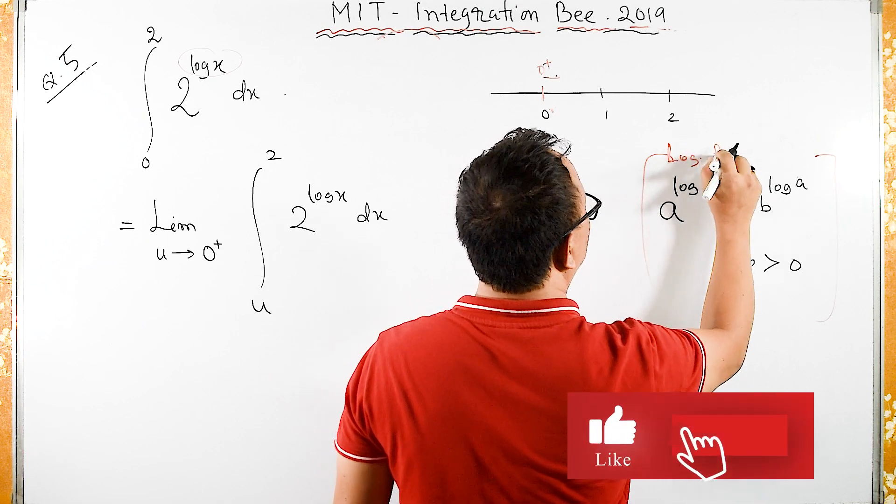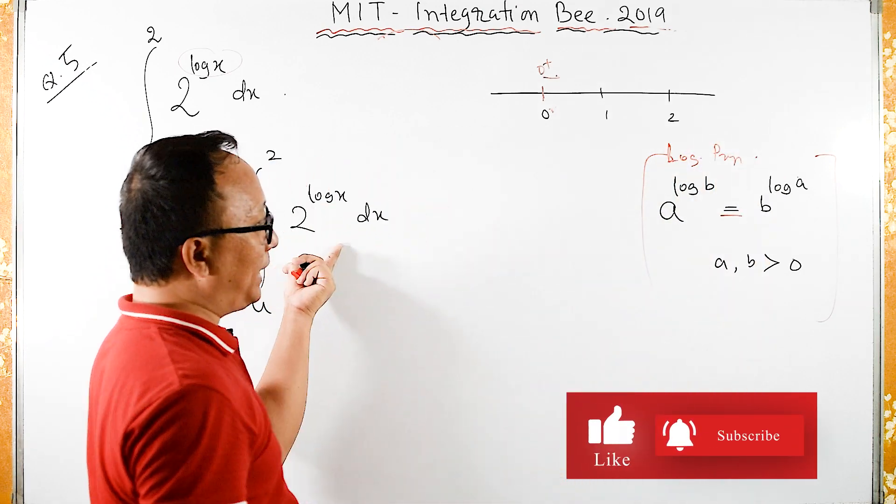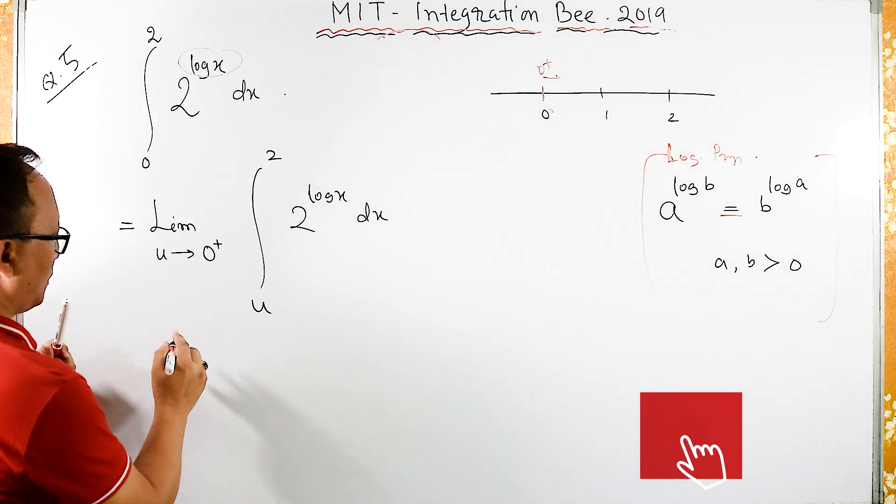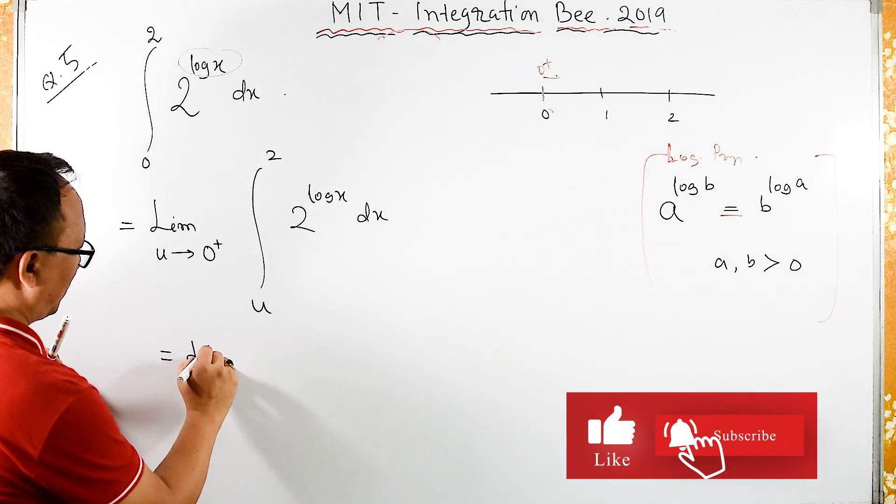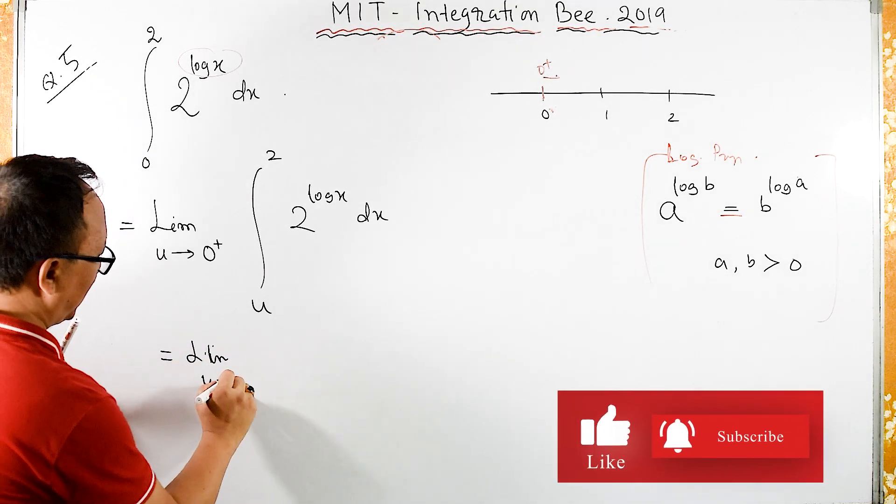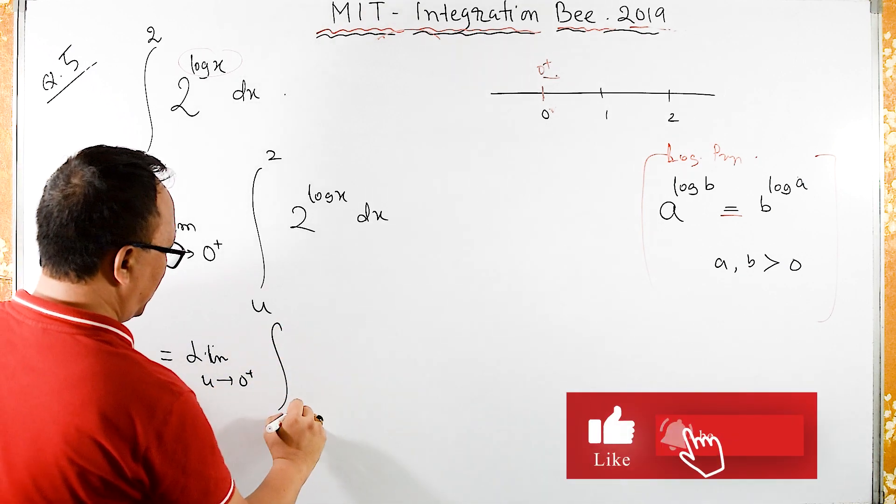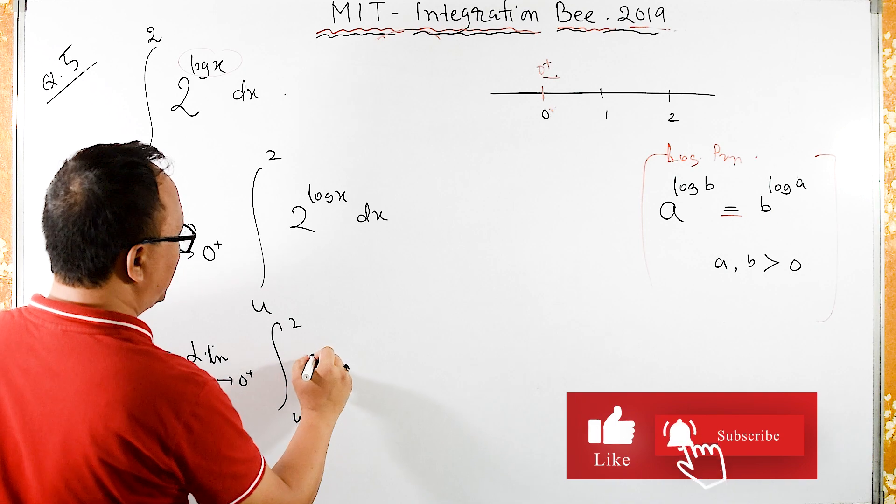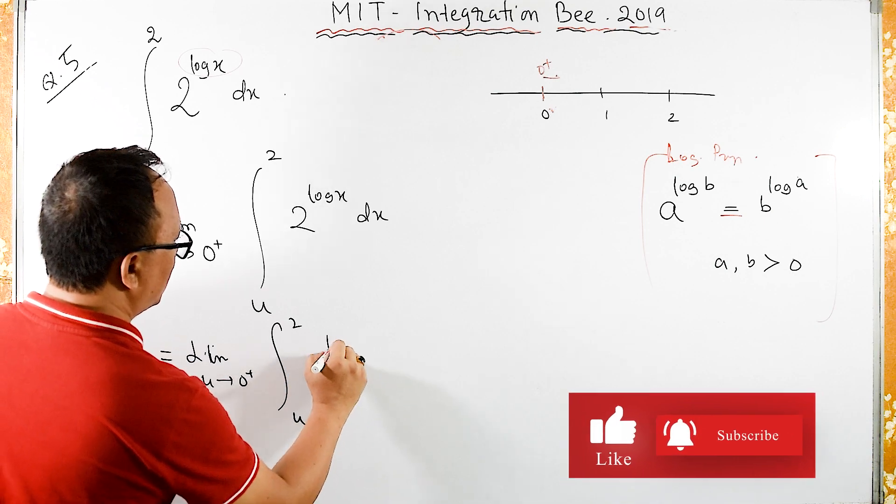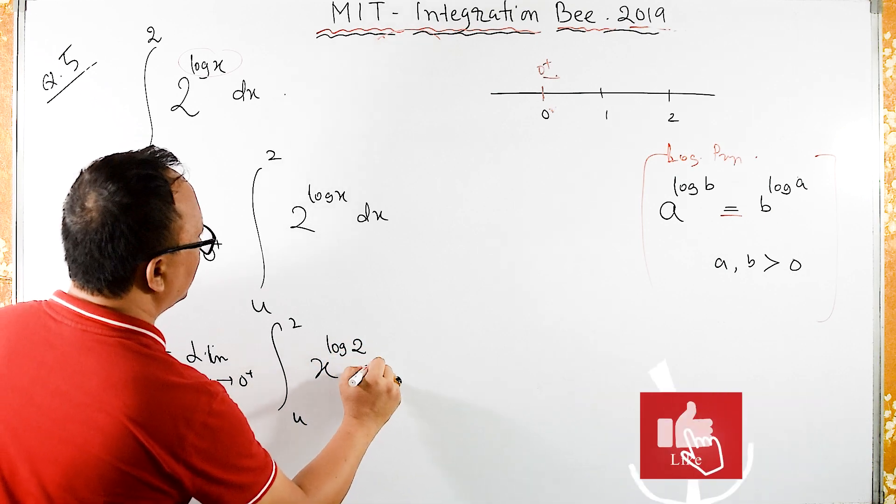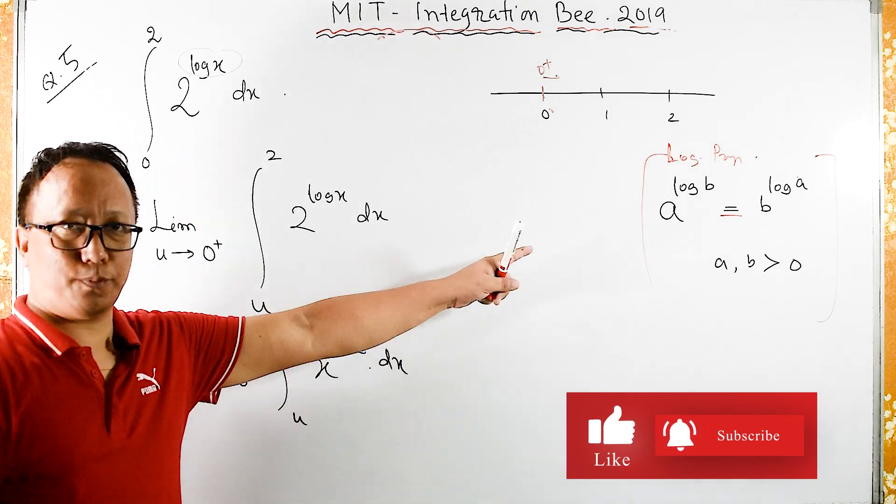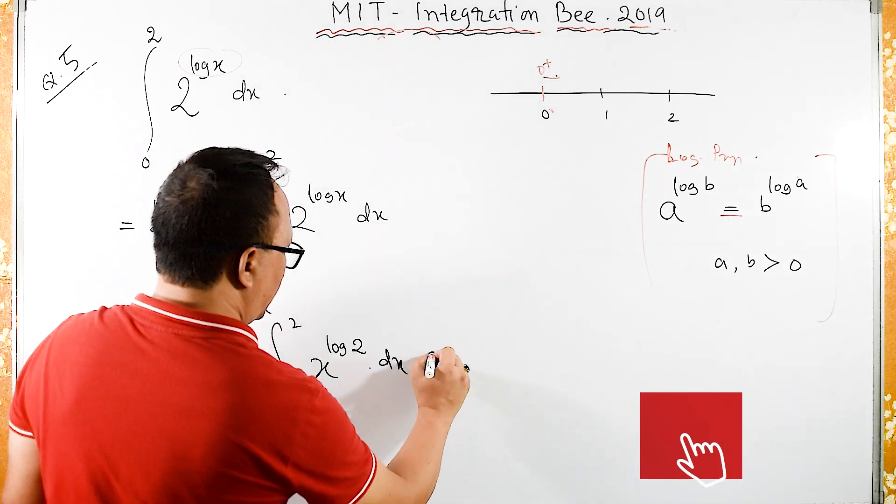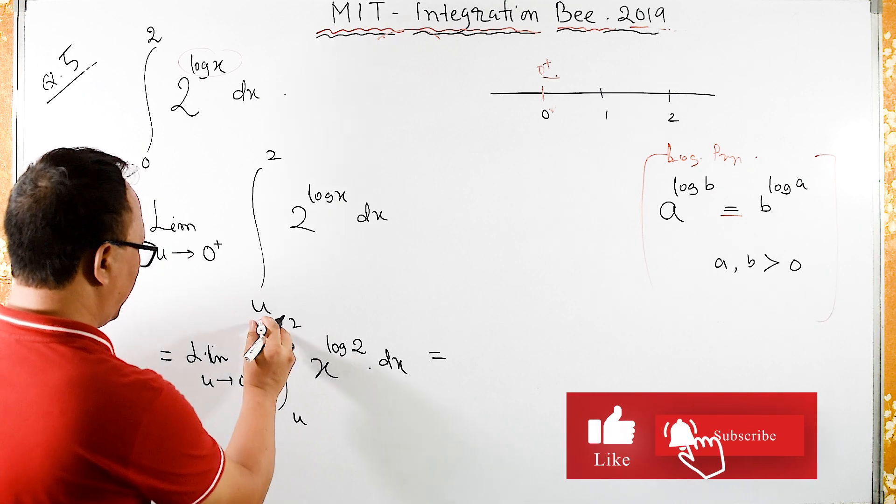Now if I apply this formula, this is same as limit of u tends to 0 plus, integral from u to 2, and I can write this as x raised to log of 2 dx by this property.